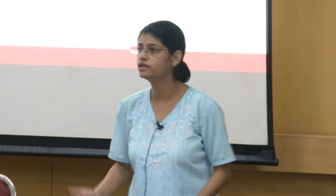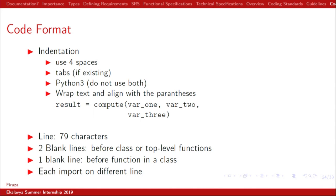If you are committing your projects to Git, you can have Git tools as well. For our project, we used Code Factor which rates the quality of our code — some time back our code was a B, now we have upgraded to A. Indentation: use either four spaces. In Python, if tabs are already existing, prefer to use tabs, whereas Python 3 doesn't allow mixing of both, while Python 2 was able to. If you have to write a long line of code and wrap it, result equals compute and var 3 will go under the variable to improve readability. There should not be more than 79 characters in a line. Between two classes, insert two blank lines; between each function, insert one blank line. Write every import on different lines.